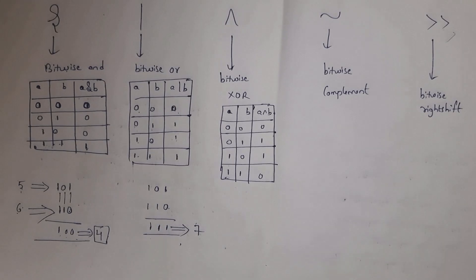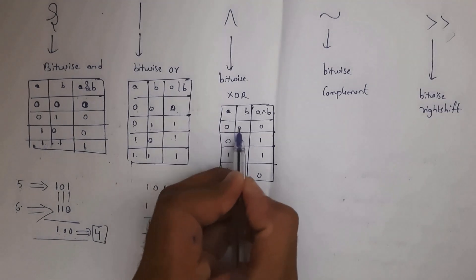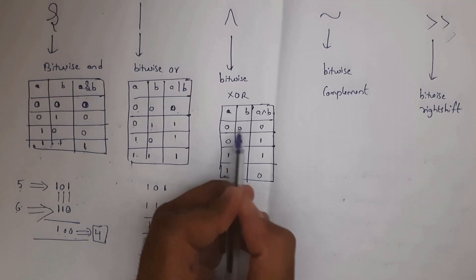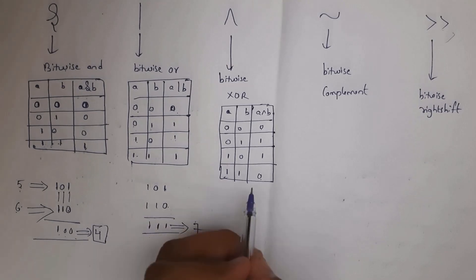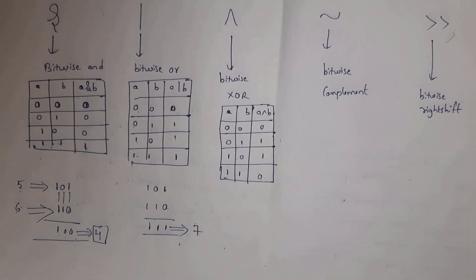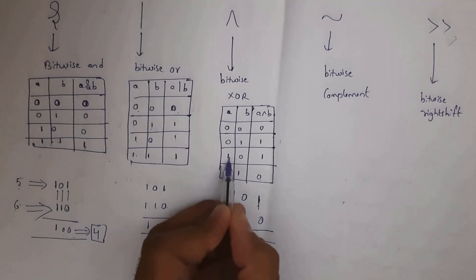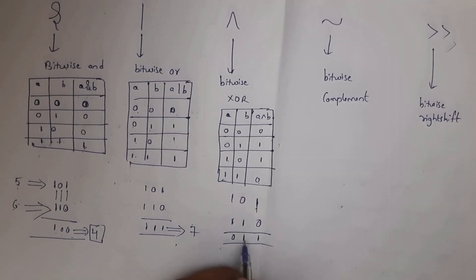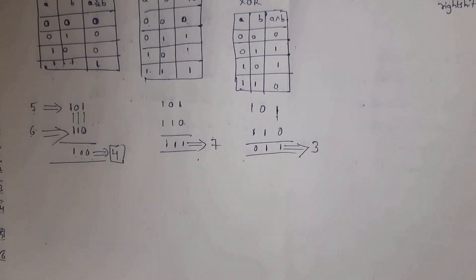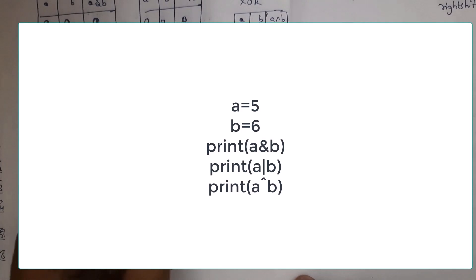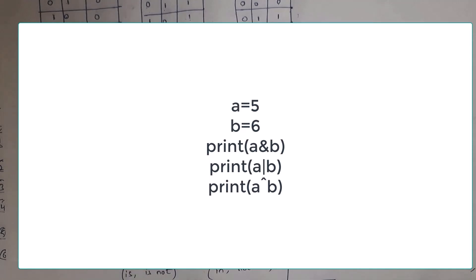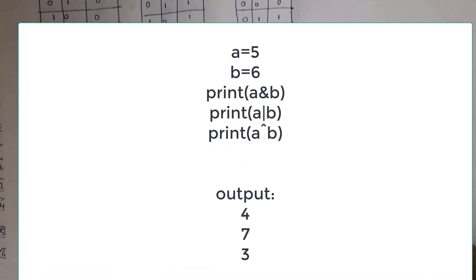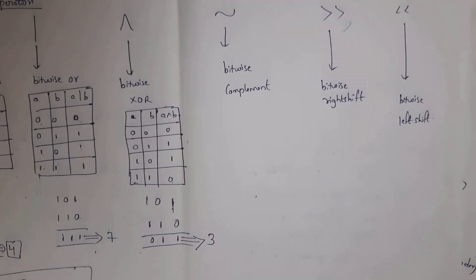For bitwise XOR: if both values are the same, result is 0 (0^0=0, 1^1=0); otherwise result is 1. For 5 (101) XOR 6 (110): 1^1=0, 0^1=1, 1^0=1 — giving binary 011, which is 3. So 5 ^ 6 = 3. The Python program with a=5, b=6 outputs: a & b = 4, a | b = 7, a ^ b = 3.